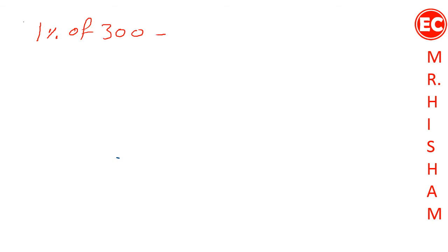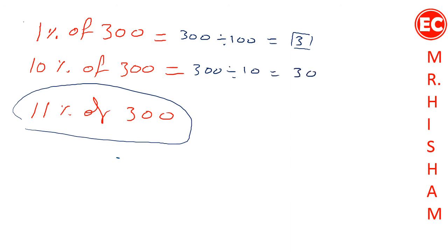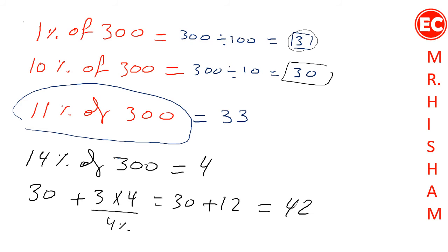To find 11% of 300, first find 1% by dividing 300 by 100, which is 3, then find 10% by dividing 300 by 10, which is 30. So 11% of 300 is 30 plus 3, which equals 33. For 14% of 300, the 10% is 30 and 1% is 3; multiply 3 by 4 to get 4%, which is 12. So 14% of 300 is 30 plus 12, which equals 42.